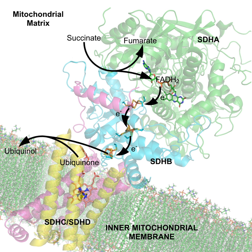Many contain the nucleotide adenosine monophosphate as part of their structures, such as ATP, coenzyme A, FAD, and NAD+. This common structure may reflect a common evolutionary origin as part of ribozymes in an ancient RNA world. It has been suggested that the AMP part of the molecule can be considered a kind of handle by which the enzyme can grasp the coenzyme to switch it between different catalytic centers.